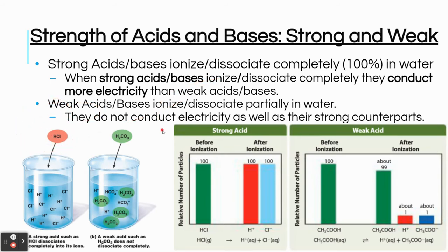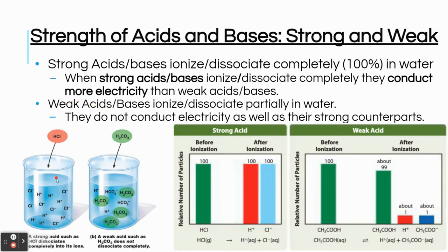A weak acid or a weak base will dissociate or ionize only partially in water — not fully. Only a very small percentage will become ions when you put them in water. For example, acetic acid: you put some in water and not all of it becomes ions. About 99% stays as CH3COH and only about 1% becomes ions. So weak acids and weak bases only partially ionize or dissociate, whereas strong acids and strong bases fully ionize and dissociate.